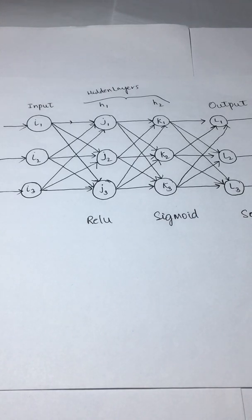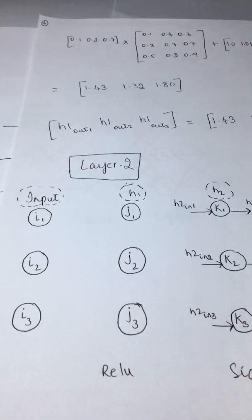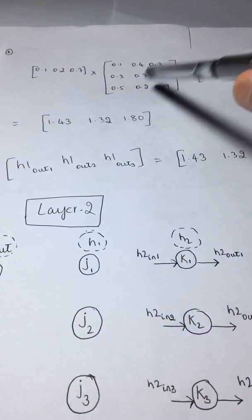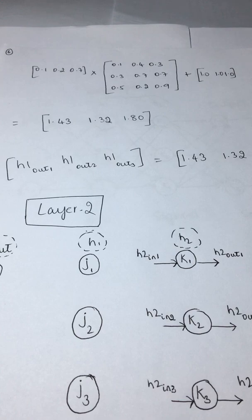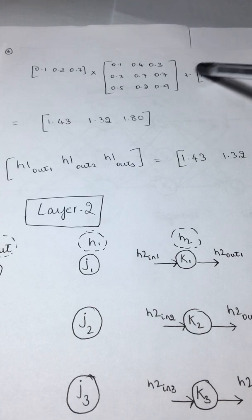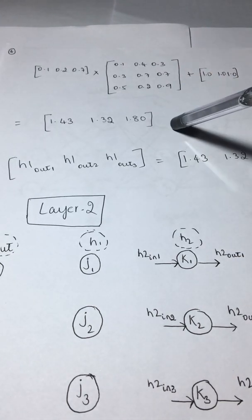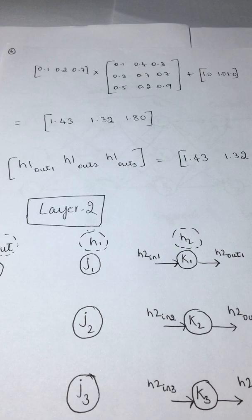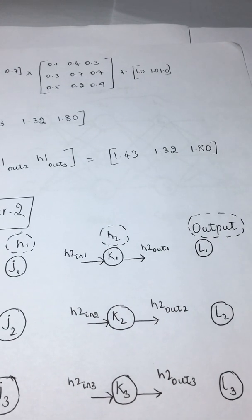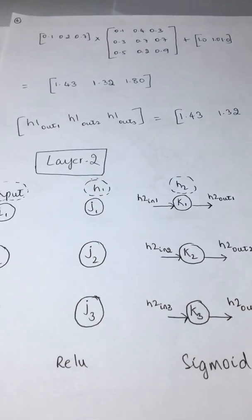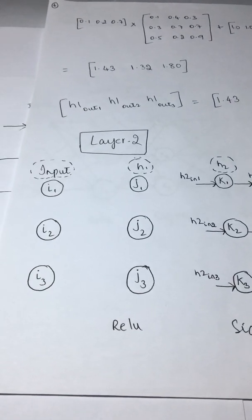Moving on to layer two: you have 0.1, 0.2, 0.7 as your inputs, the randomly assigned weights, and the biases. After you pass these through, since the activation function is ReLU, these are your outputs. Now we'll look at layer two.